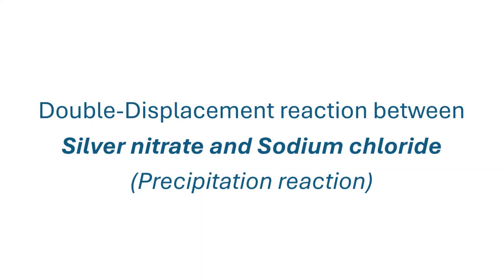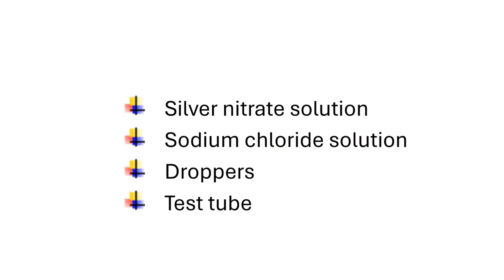The reaction between silver nitrate and sodium chloride aqueous solutions is yet another example of a precipitation reaction, which is a type of double displacement reaction. To perform this experiment, you'll need the following: